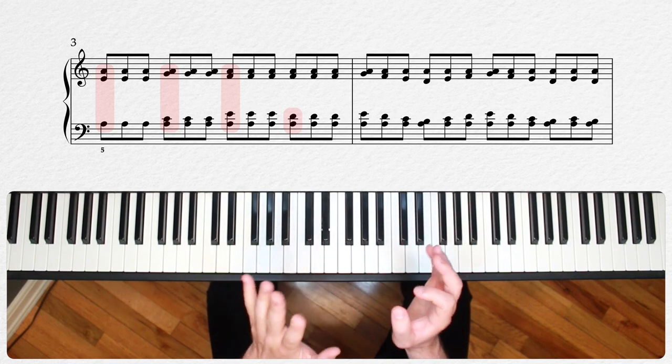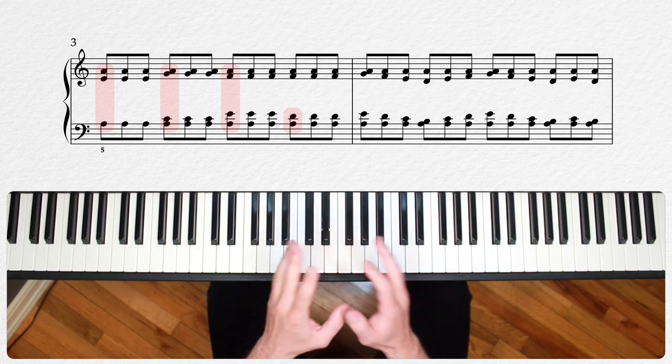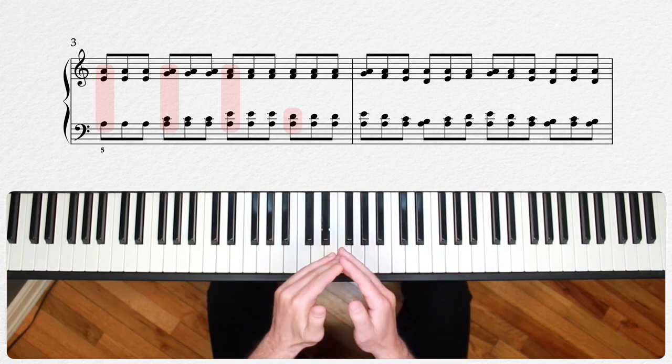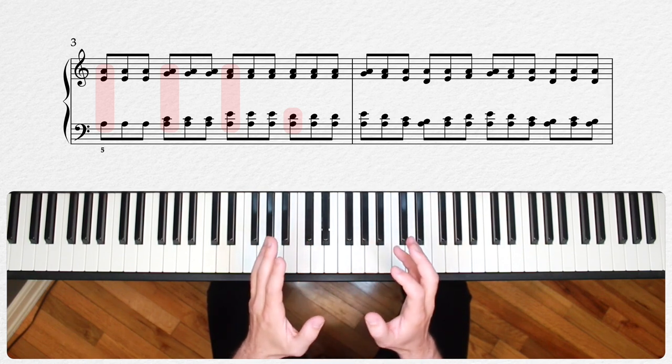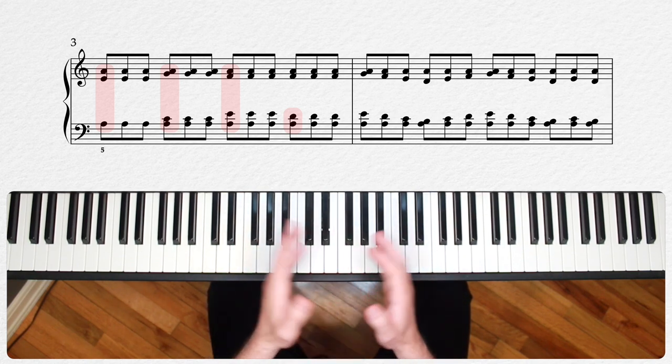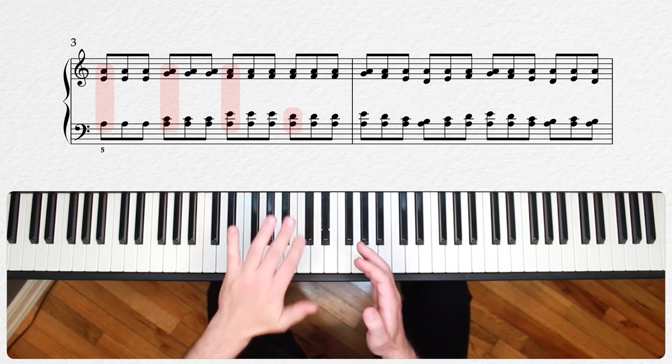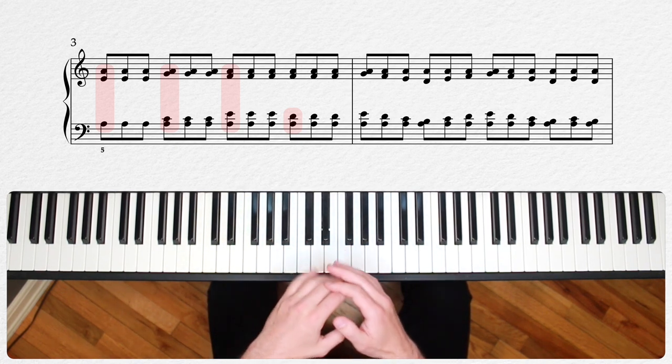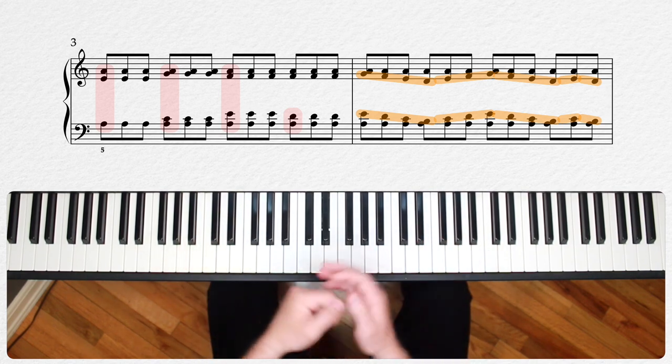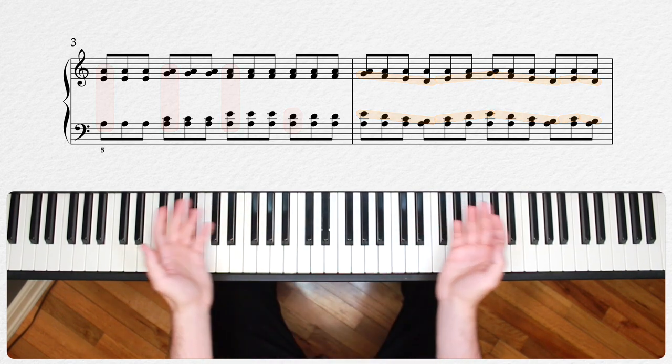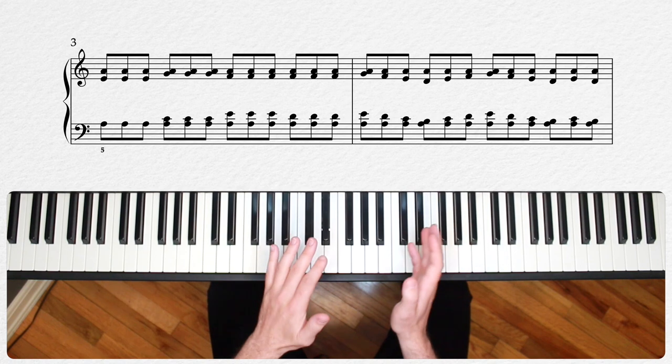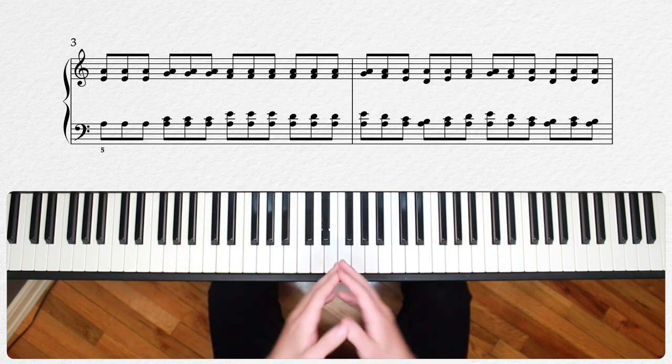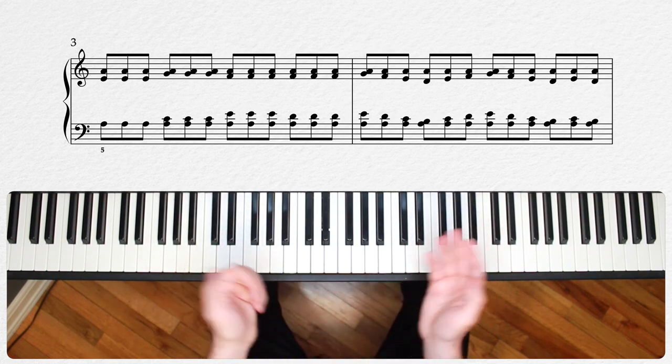You can see in measure four, we have two sets of moving through lines. One in the right hand happening under this repeated line of A's and the other in the left hand happening above a line of A's. So let's put some horizontal highlights on both of those. Finally, let's do what we did earlier and subtract from the score all of the repeated notes, leaving us with only our highlighted moving notes.